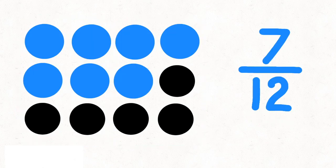For the next one, let's color 7 of the dots blue. So that's 7 twelfths of the dots. Just like 5, 7 doesn't go into 12 evenly, so it too would get more complicated. So there's no need to simplify. We just call this 7 twelfths.